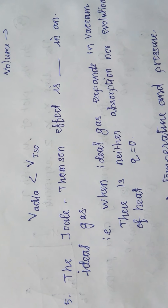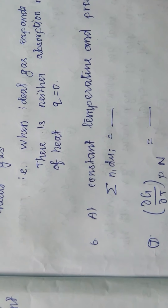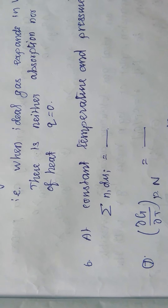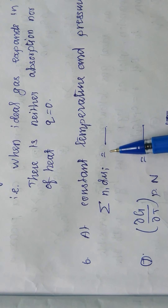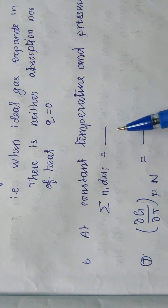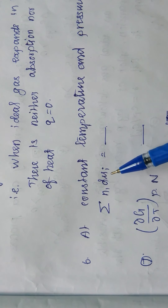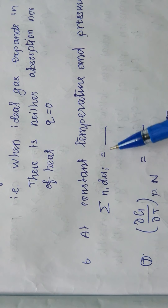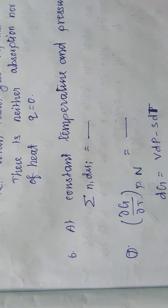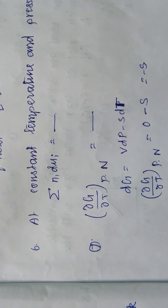The next question: at constant temperature and pressure, σniμi = 0. This is the Gibbs-Duhem equation. At constant temperature and pressure, σni dμi = 0. This is an important one.